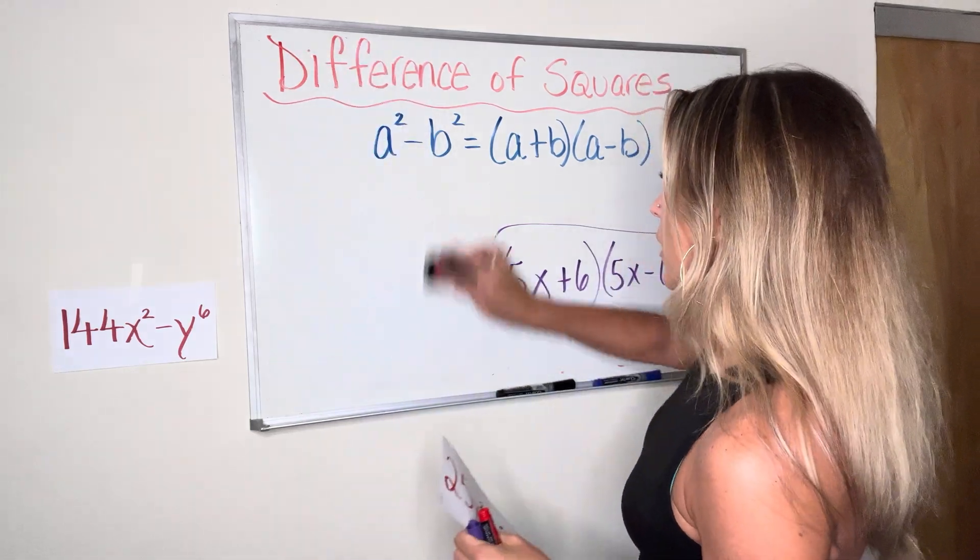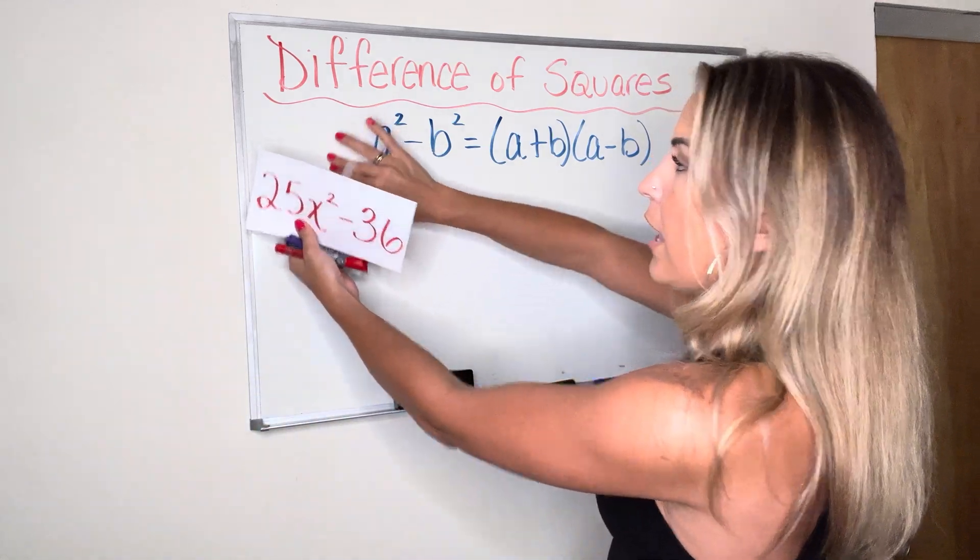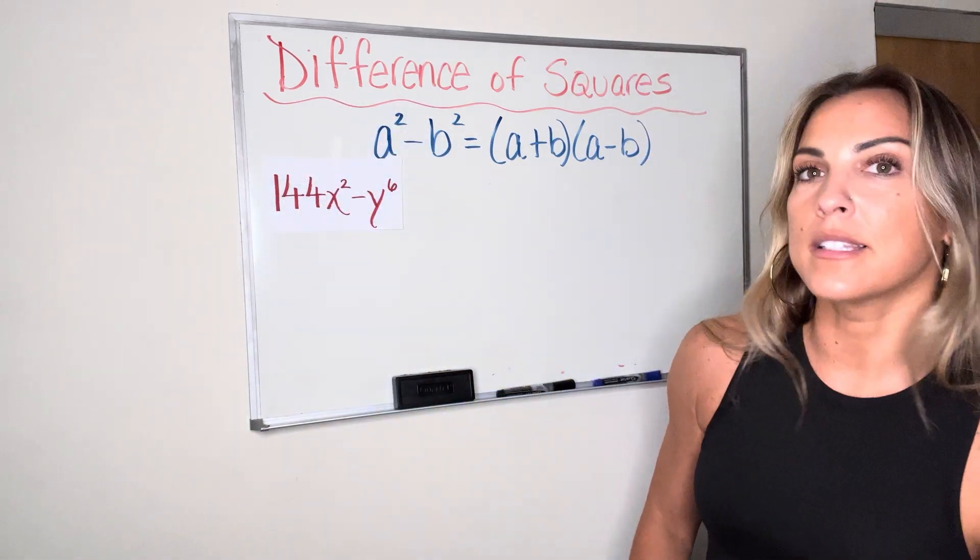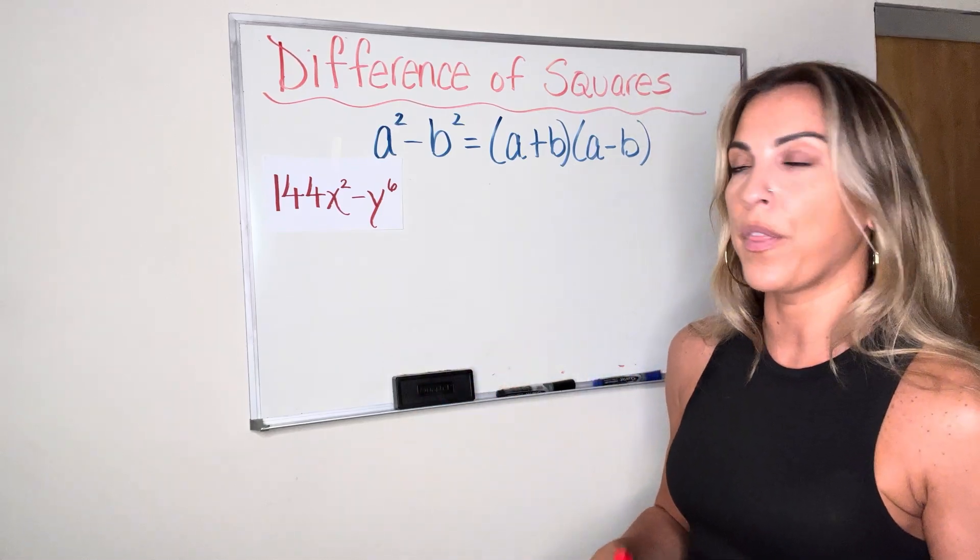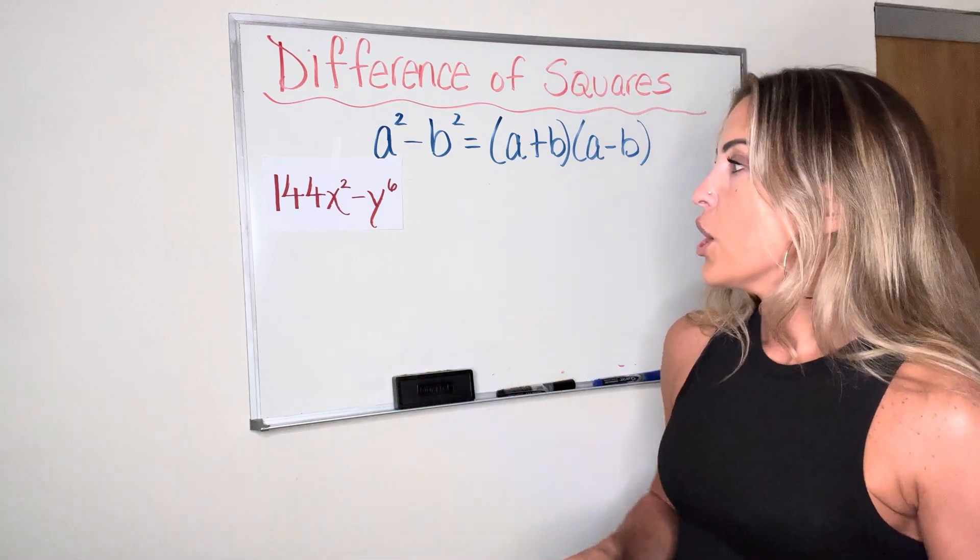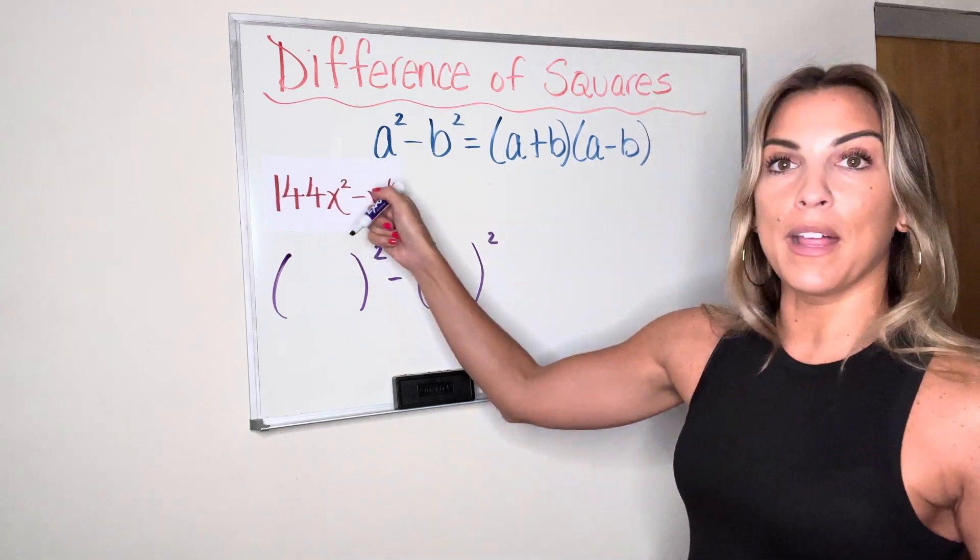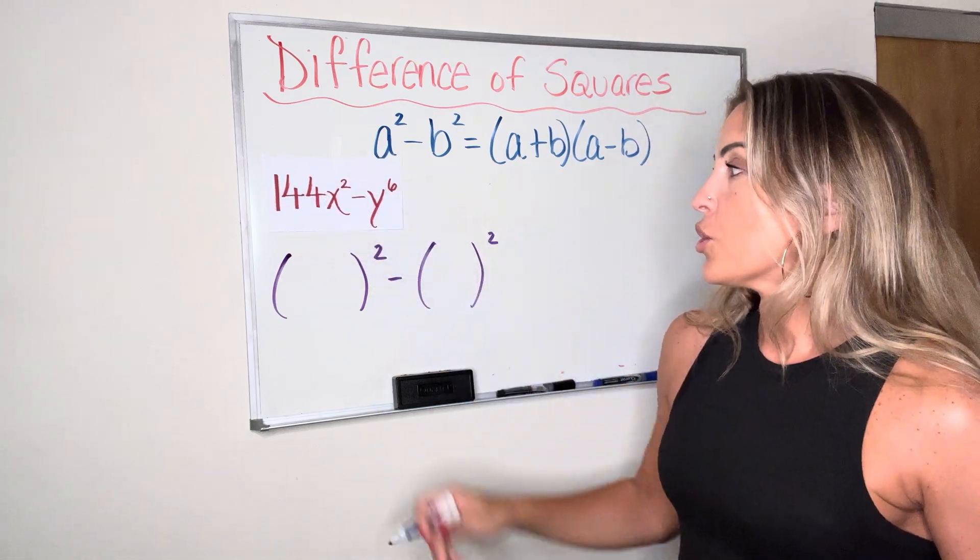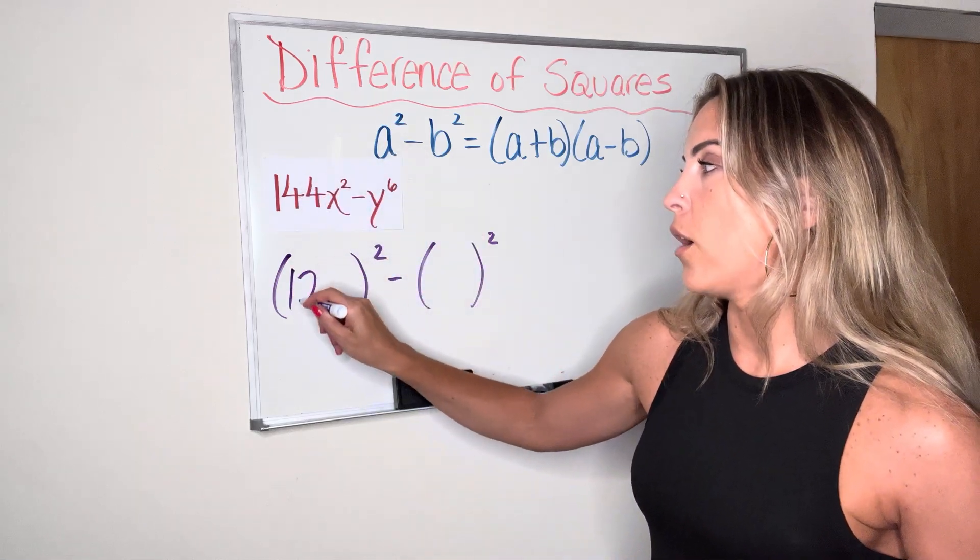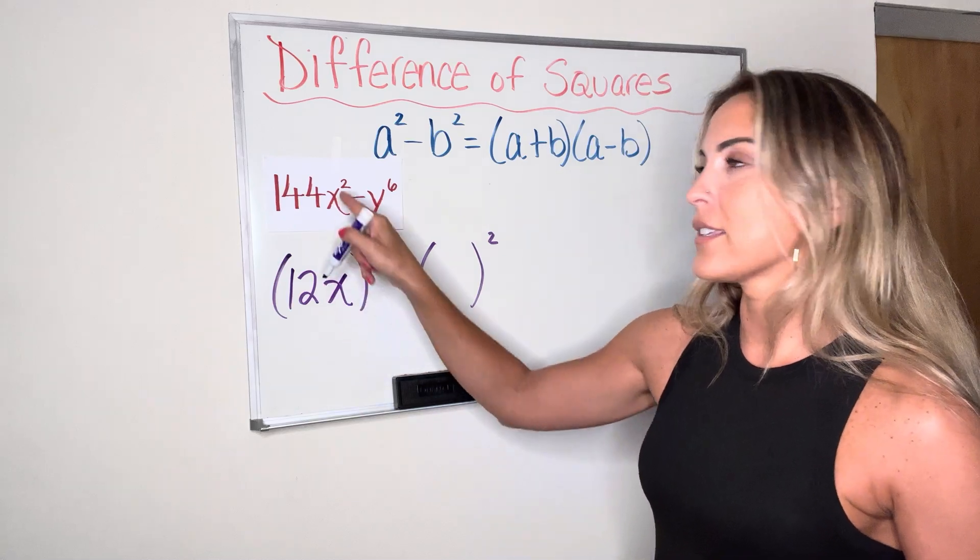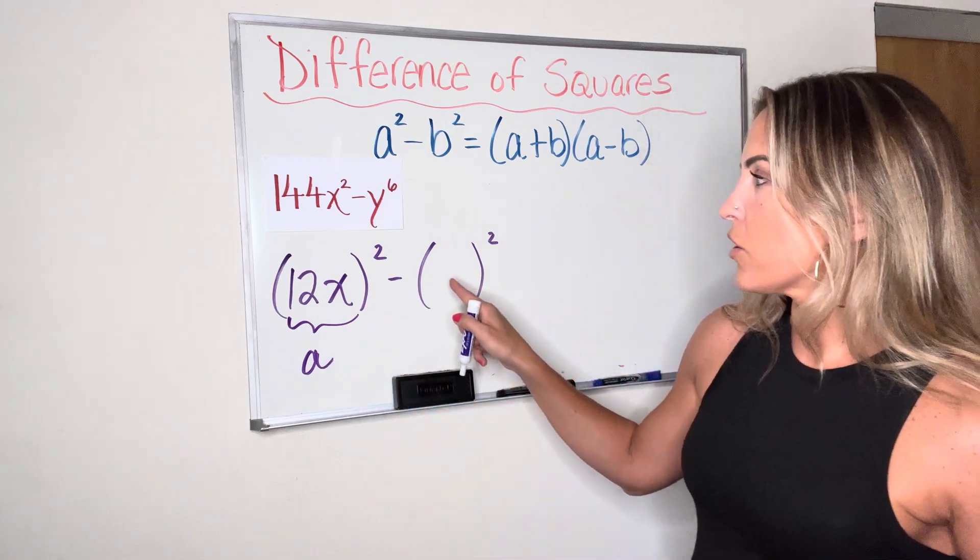One more example. It's going to get a little more complicated. I'm trying to rewrite this red expression as something squared minus something else squared. As you're watching, if you think you have an idea, please pause the video and try it. See if you can get it on your own without me. And then see if you got it right. So I'm looking for something squared minus something else squared that will not change the value of these, right? So what squared would get me 144x squared? Well, I know that 12 times 12 is 144, and I know that x times x is x squared. So here is my A term. And what about the second term?